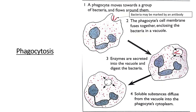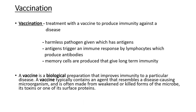Phagocytes carry out phagocytosis. A phagocyte moves towards a group of bacteria — which may be marked by an antibody — and flows around them. The phagocyte cell membrane fuses together, enclosing the bacteria in a vacuole. Enzymes inside the phagocyte are then secreted to engulf and digest the bacteria. The soluble substances diffuse from the vacuole into the phagocyte cytoplasm. During an exam, never say the phagocyte 'eats' the bacteria — use the word 'engulf.'